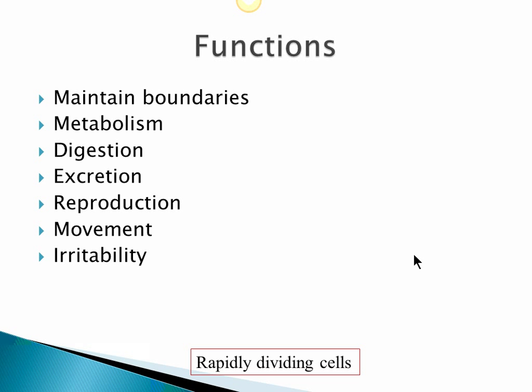Most cells are capable of reproduction. One exclusion is the red blood cell — it does not have a nucleus, so it is not capable of reproduction, yet it is still a living cell. There are also certain cells in our body which were capable of reproduction during fetal life or when development was going on.